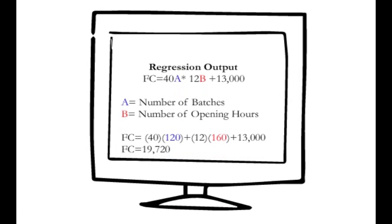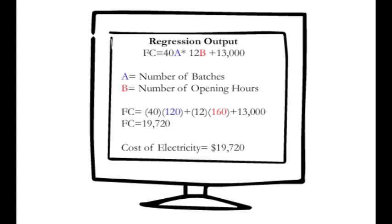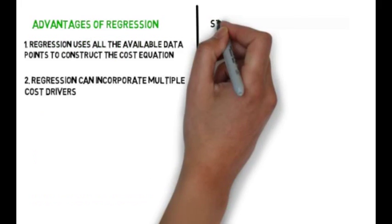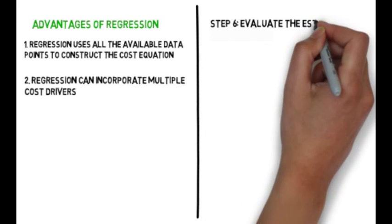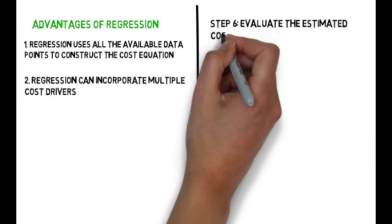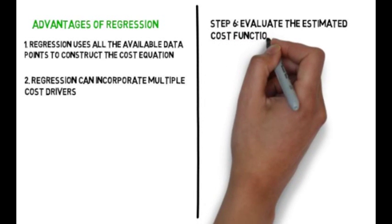Bob puts his data into Excel and generates the regression model. In the following month, Bob believes he will produce 120 batches and be open for 160 hours, which means an estimated electricity cost of $19,720. Finally, Bob assesses the cost model in relation to the operations of the bakery and believes it provides an accurate representation of cost incurrence.